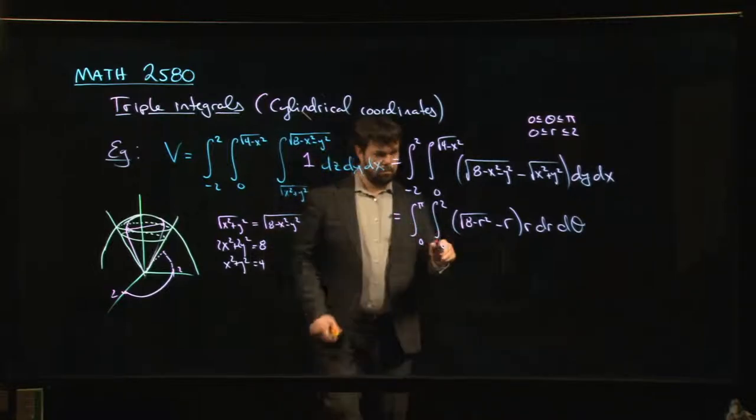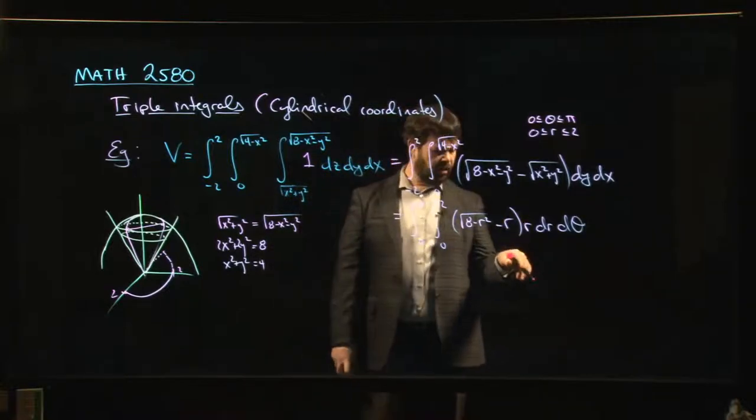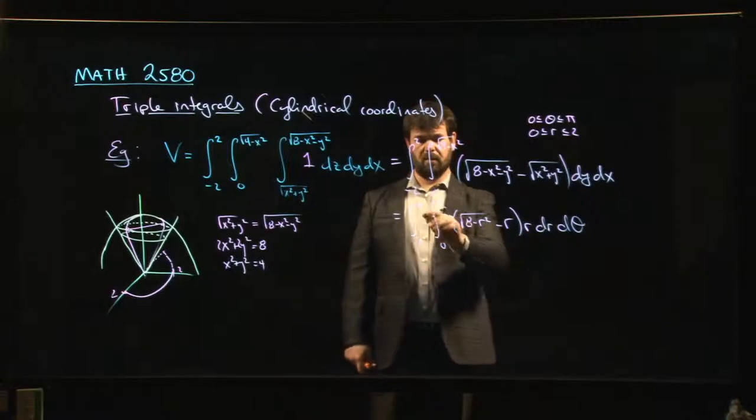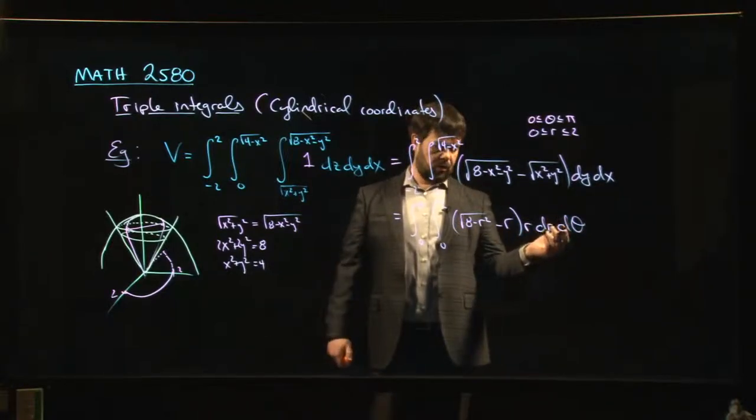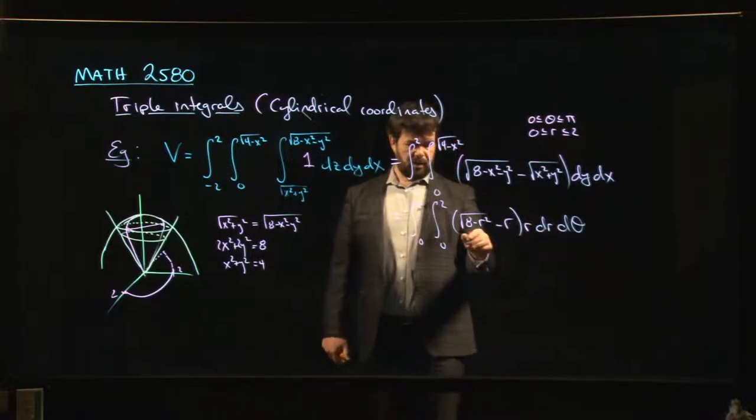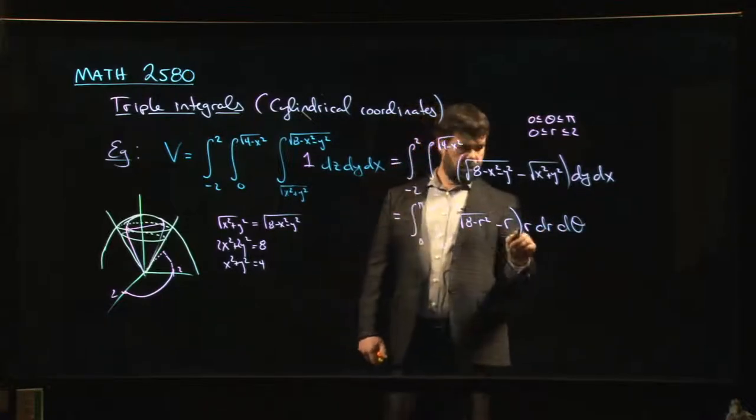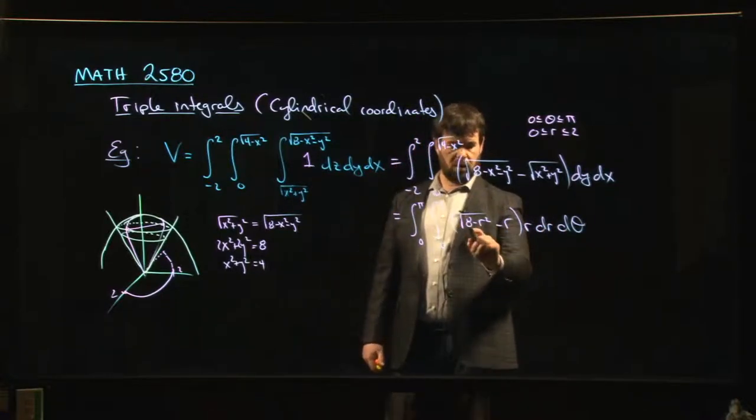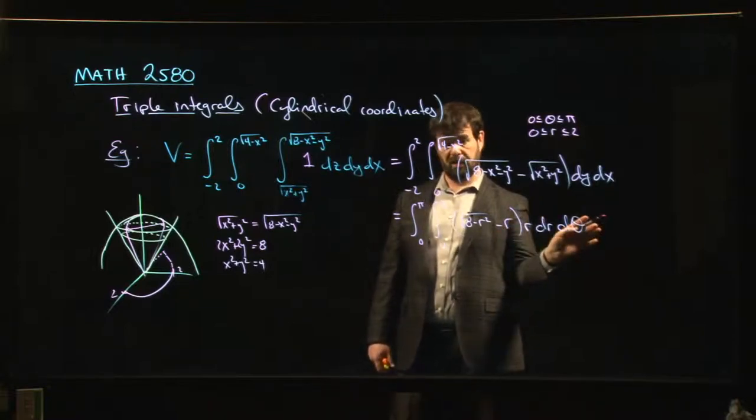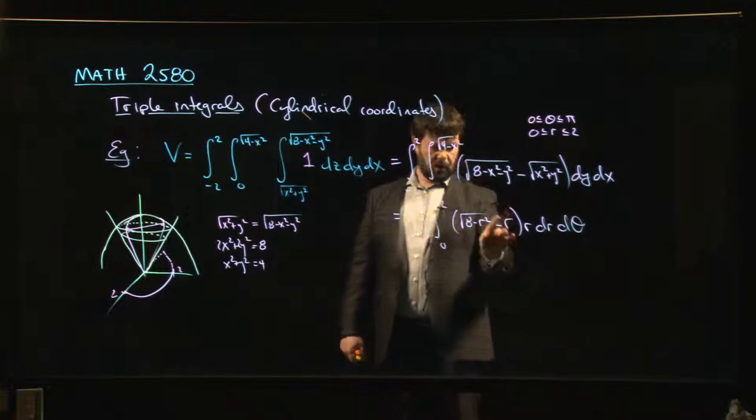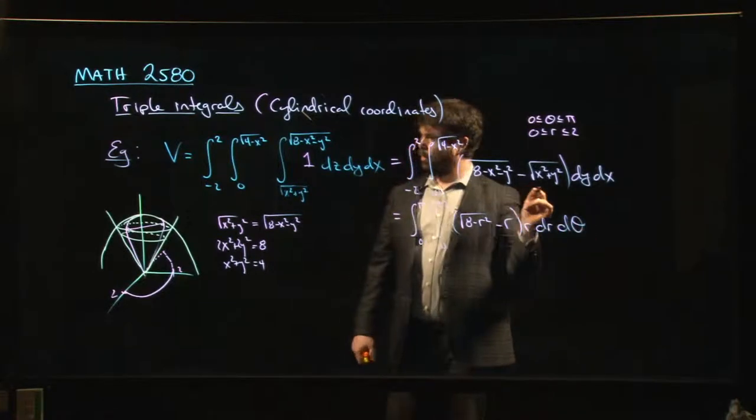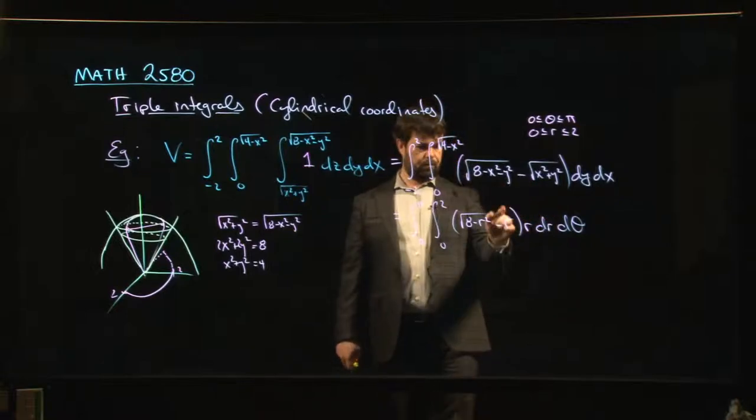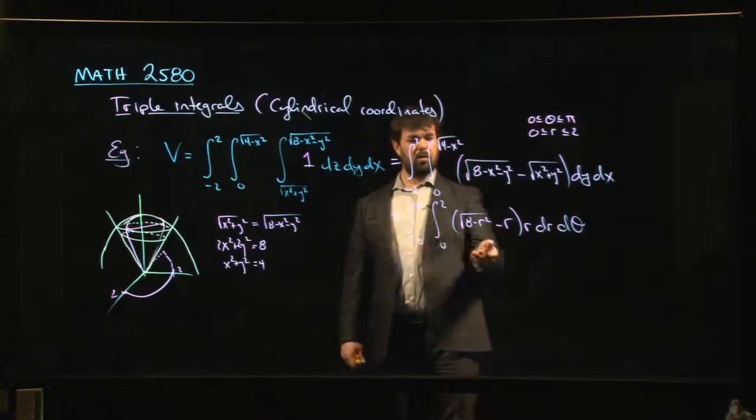We can carry this out. This is not so bad. It doesn't even depend on theta. There's a pi out front. This is now a calc one integral. I probably don't need to necessarily carry it out for you. If you multiply the r through, r times the square root you can do that with a u substitution. r times r, well that's just power rule.